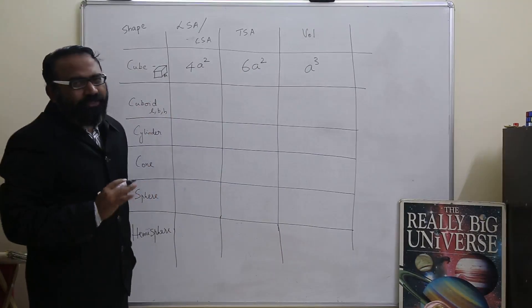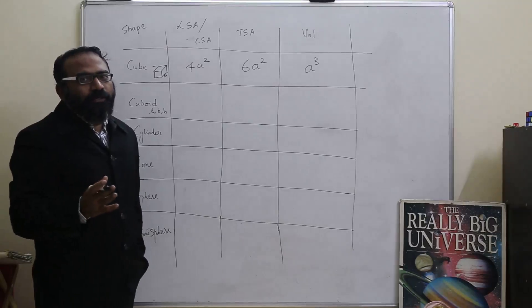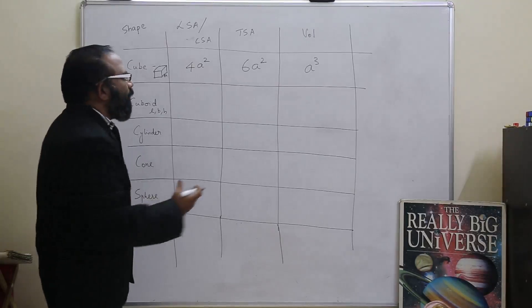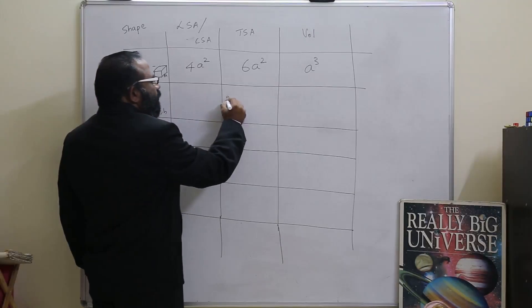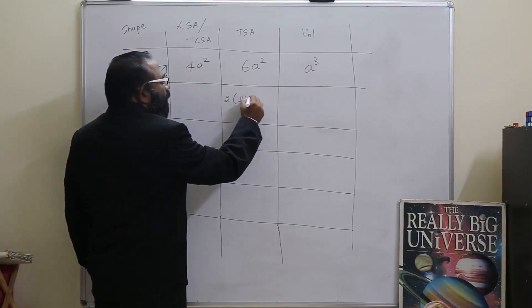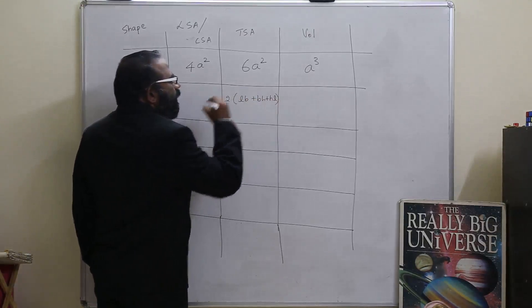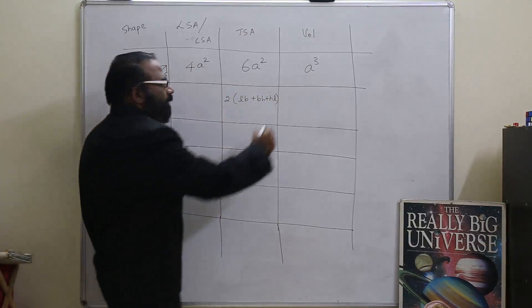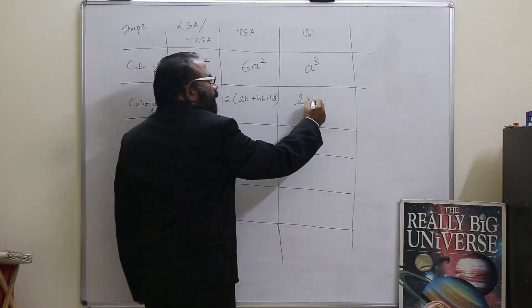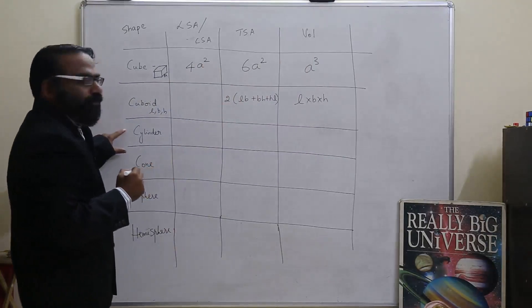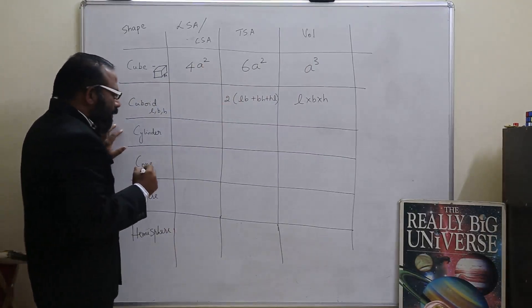I'm not putting the lateral surface area here because depending on which side is down, your lateral surface area changes. So what is the total surface area here? It is 2 into LB plus BH plus HL, and the volume is L into B into H. Now the next one is cylinder.